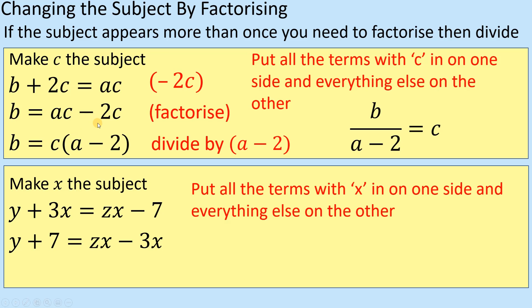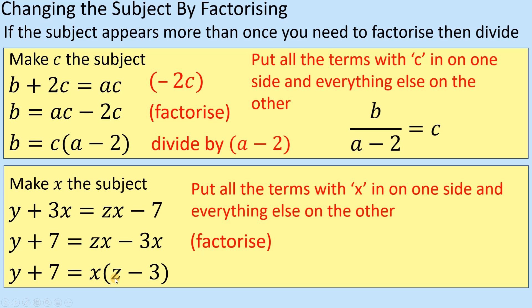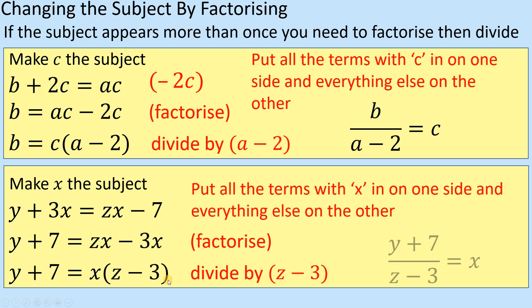That should now be similar to what we had before — the process is the same at this point. We've got X in both of these two things, so we look to factorise it so that X goes on the outside of the bracket. We've got Z left, there's the Z, and then we've got minus 3X, so there's the minus 3. That gives X(Z minus 3). And the left hand side stays exactly as it was. Like before, because these two are times together, we do the inverse — so it's going to be (Y plus 7) divided by (Z minus 3). So Y plus 7 over Z minus 3 is equal to X, and X is isolated.